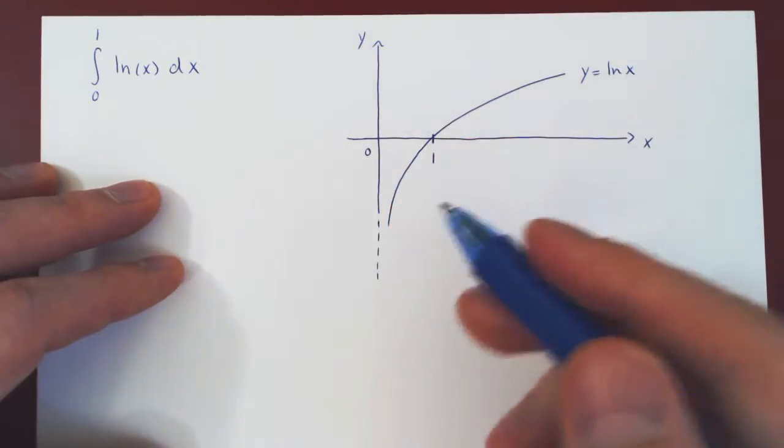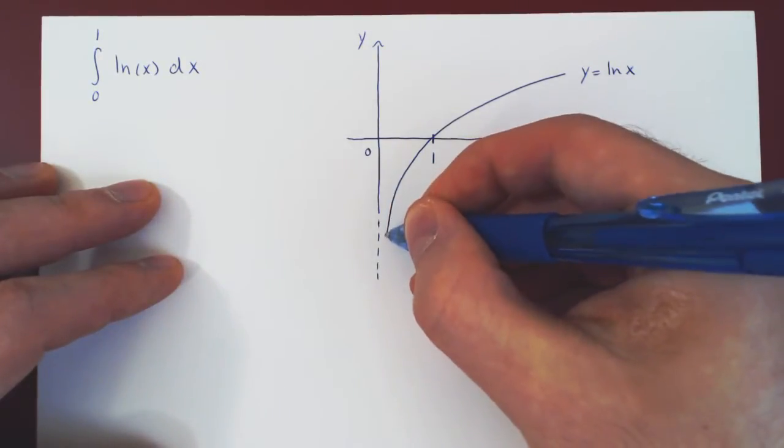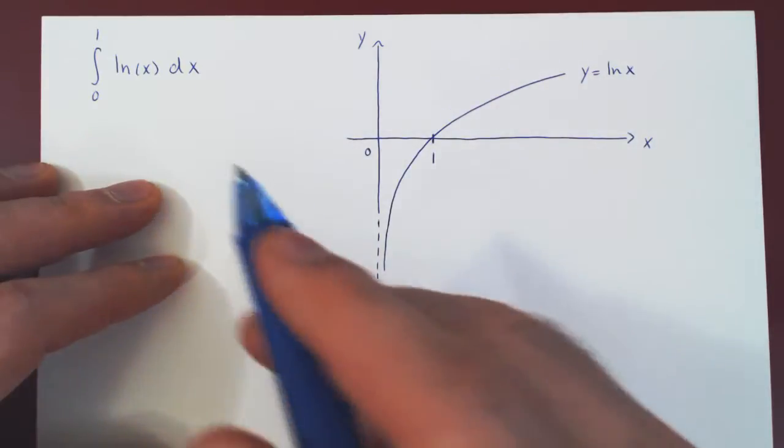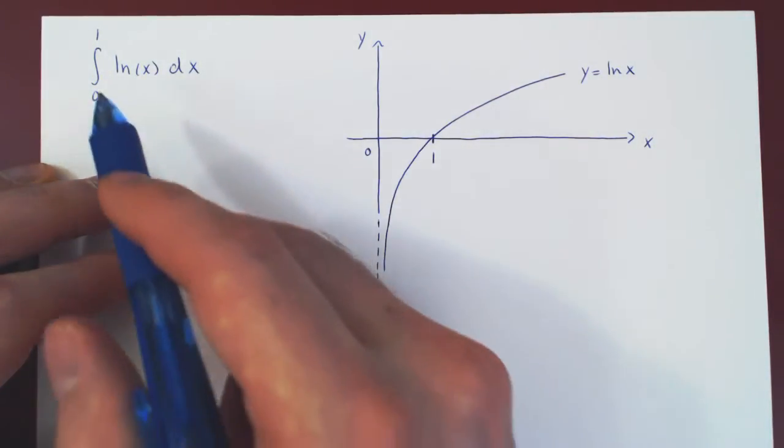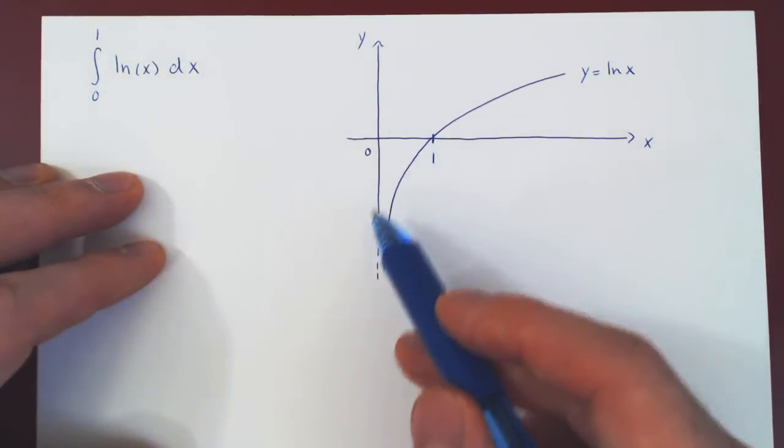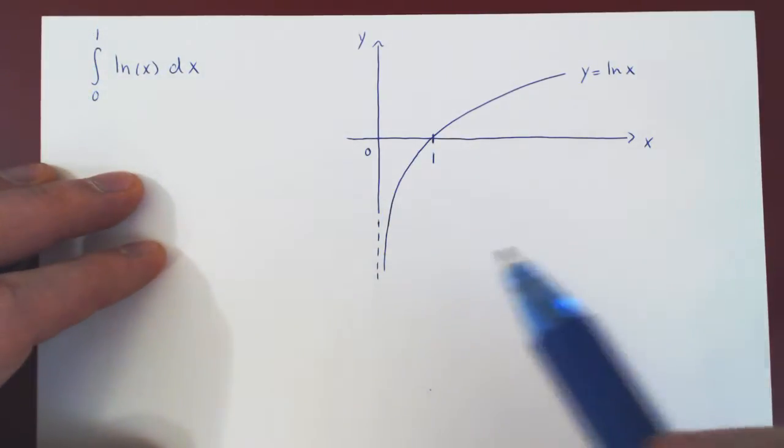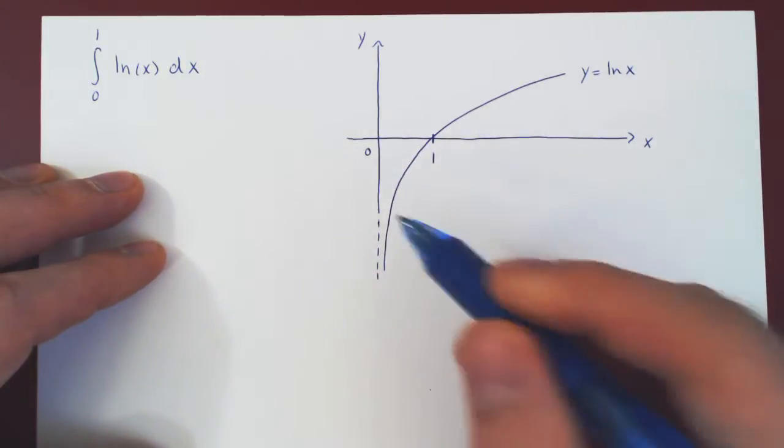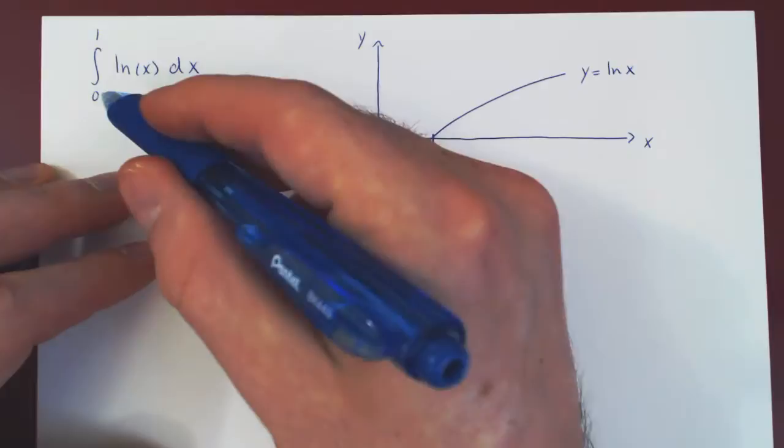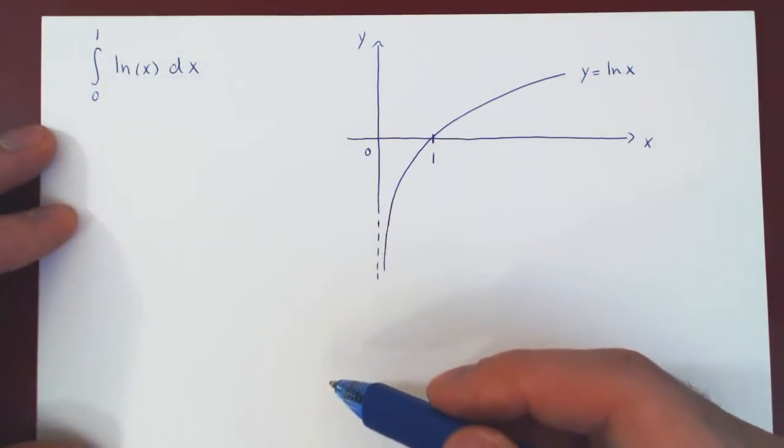So right away we know we cannot try to evaluate this definite integral that is an improper integral with the fundamental theorem of calculus. We can't do this directly as we have a discontinuity that is part of our interval of integration.